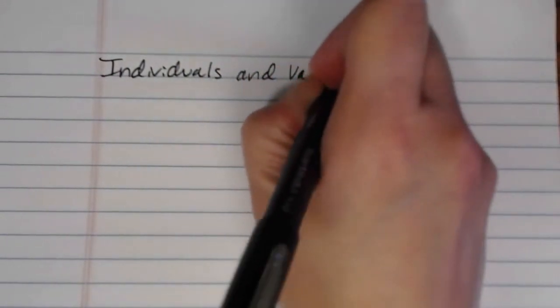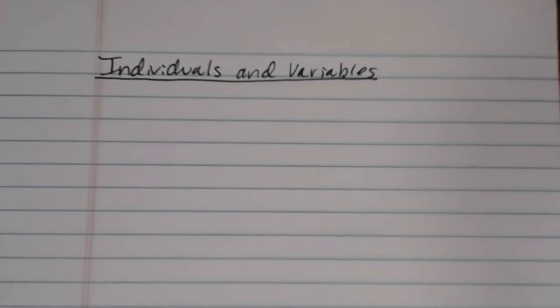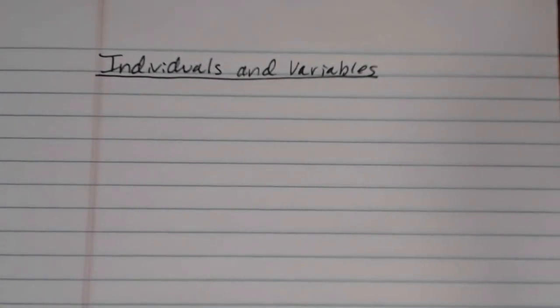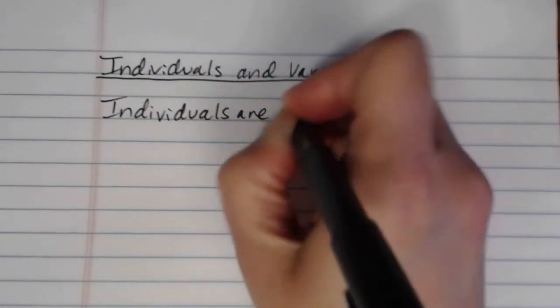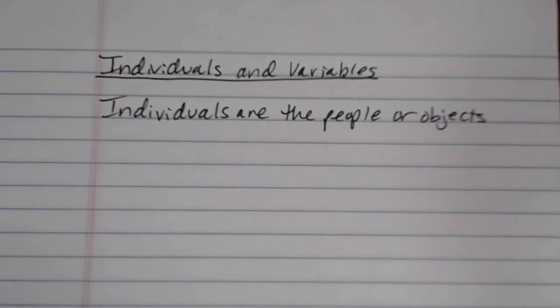One of the first things that you should probably know is the distinction between individuals and variables. These terms are used in statistics a little bit differently than they're used in either everyday speech or than they may have been used in your previous math courses. When we talk about individuals in a statistical context, we're not necessarily talking about people. Normally when we use the word individuals in everyday speech, we're talking specifically about people. But in statistics,